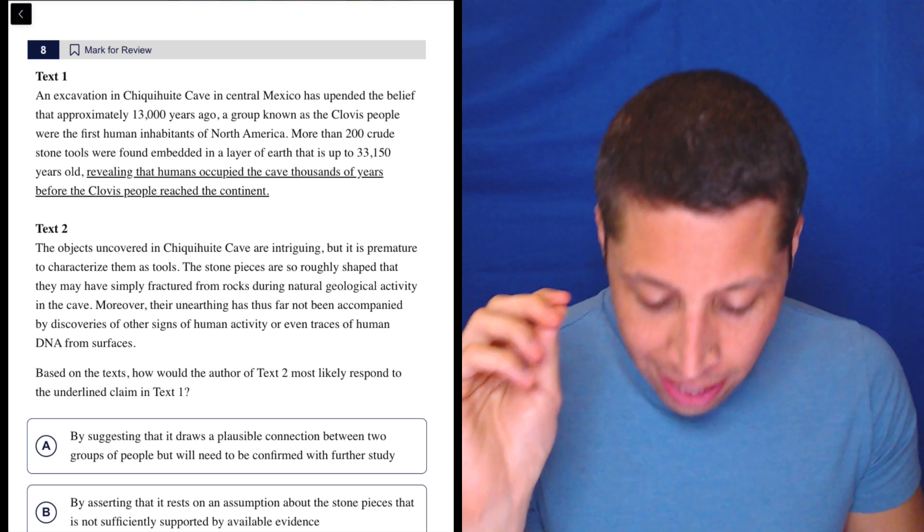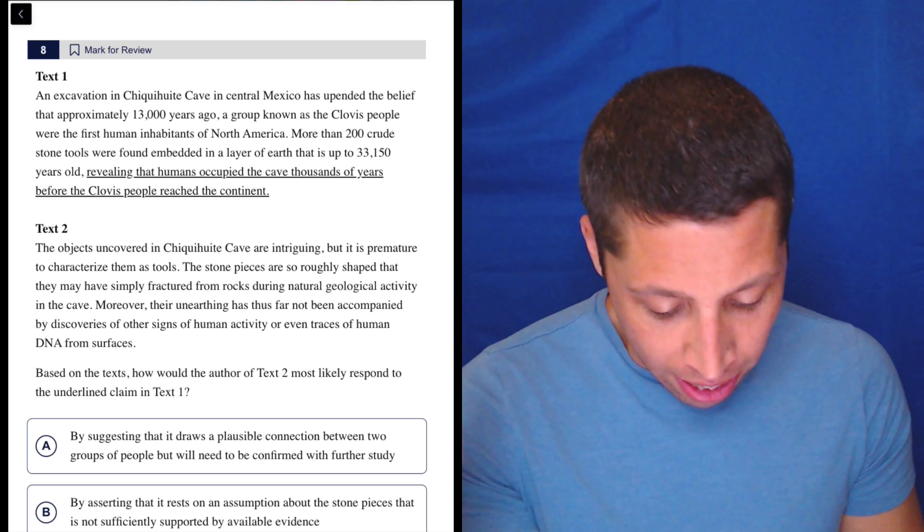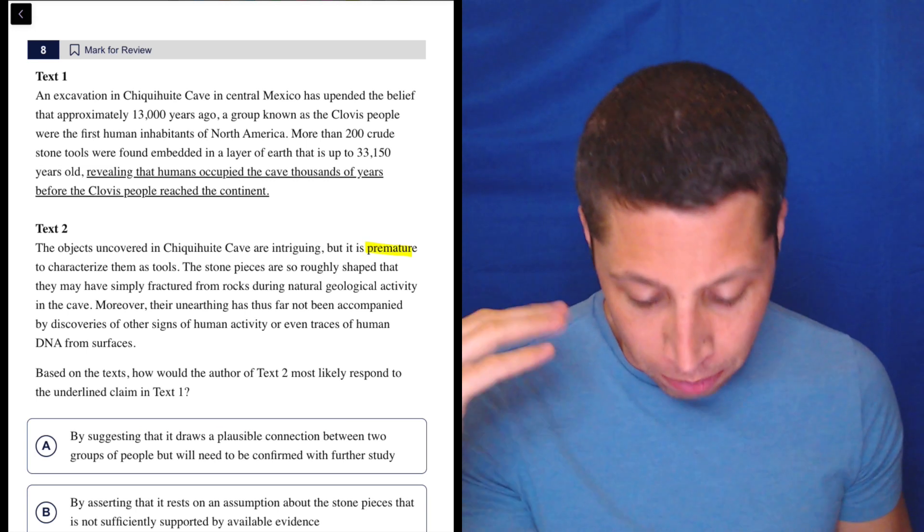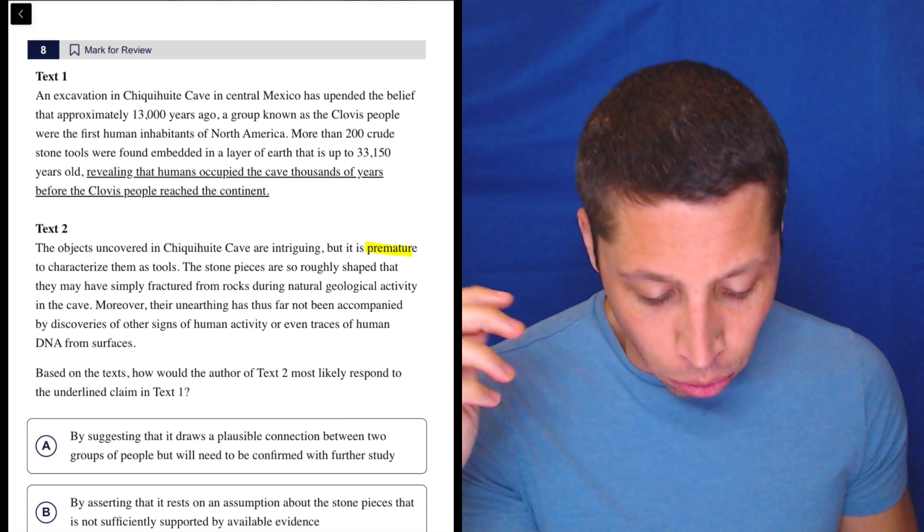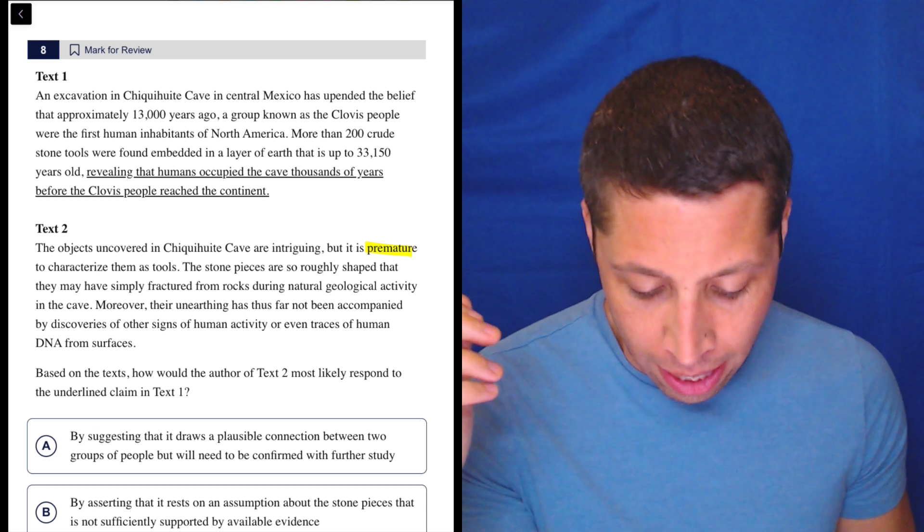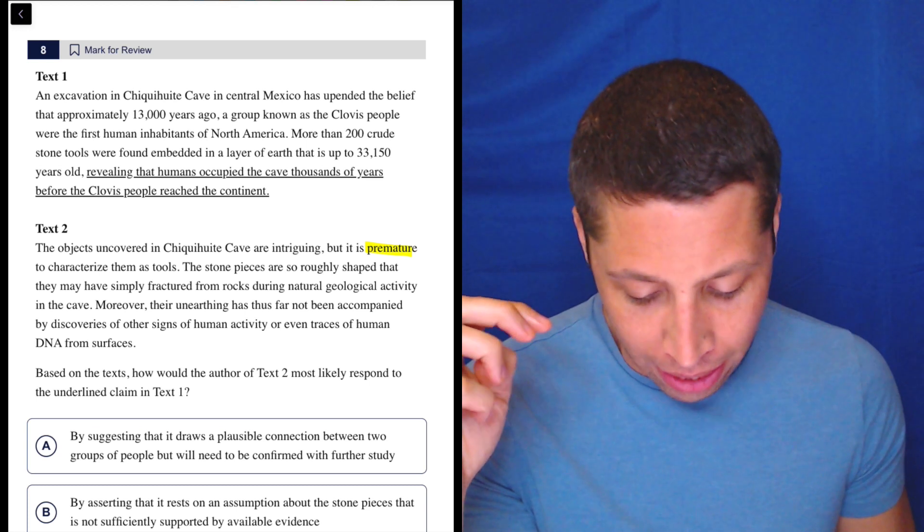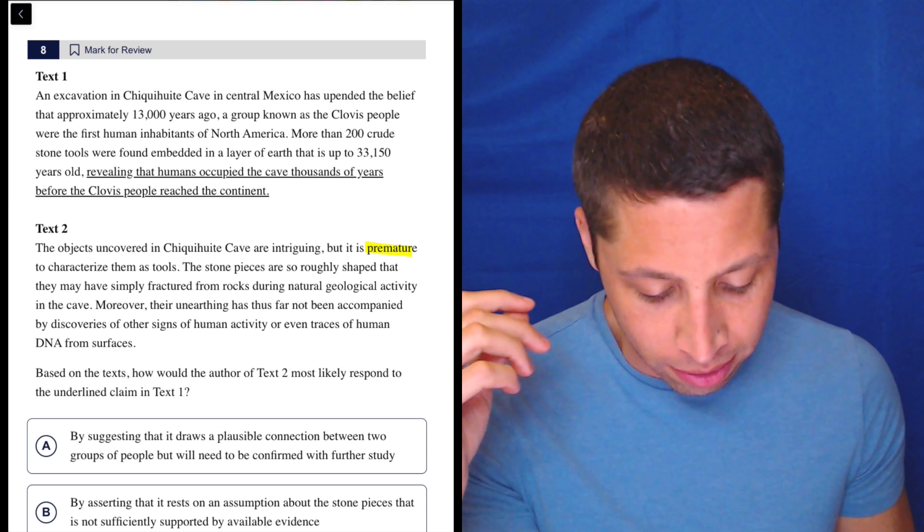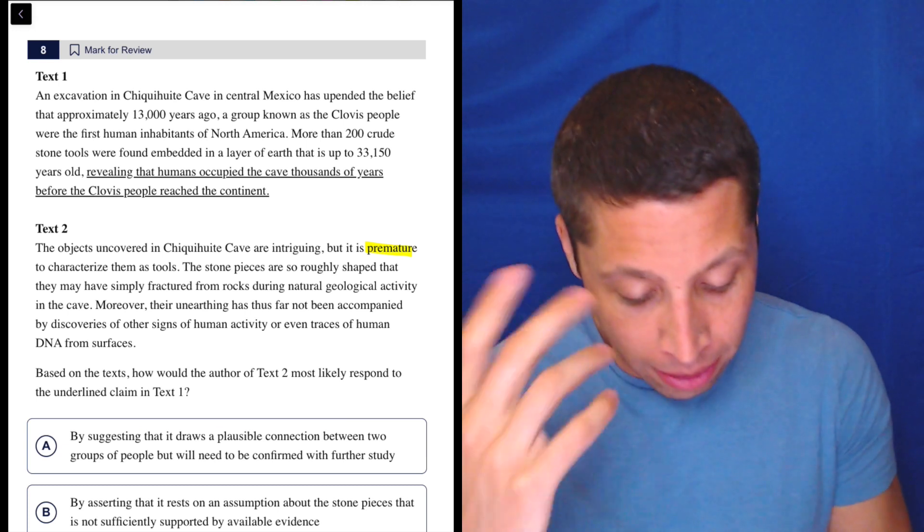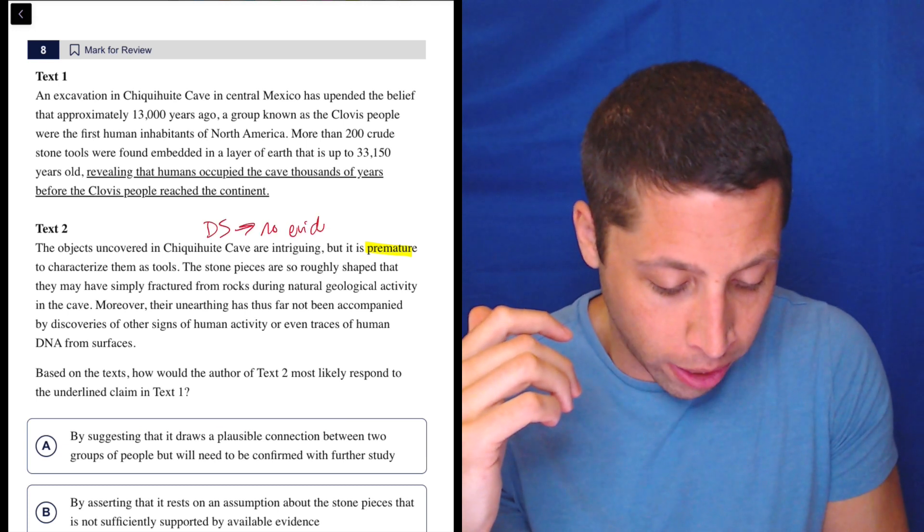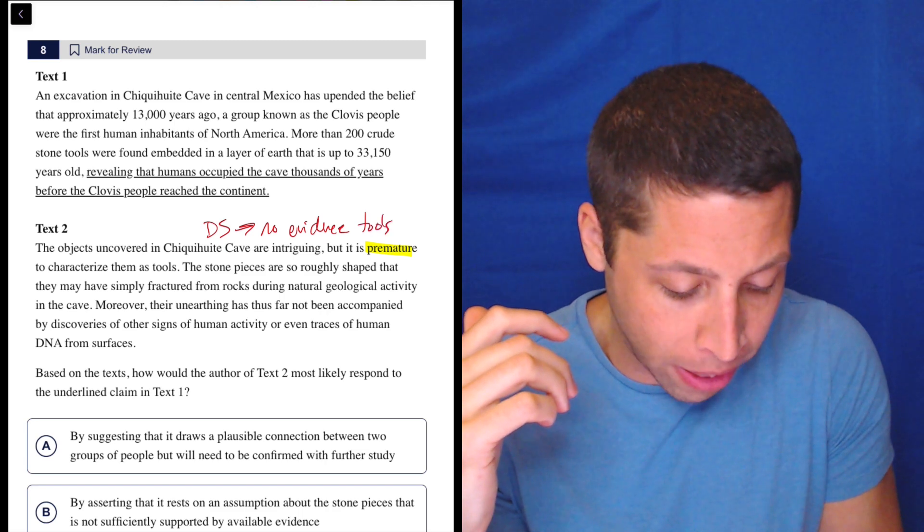Text two: the objects uncovered in this cave are intriguing, but it is premature to characterize them as tools. So premature means bad. The stone pieces are so roughly shaped that they may have simply fractured from rocks during natural geological activity in the cave. Moreover, their unearthing has thus far not been accompanied by discoveries of other signs of human activity or even traces of human DNA from surfaces. So my dumb summary here is it's premature because there's no evidence, right? No evidence that they're tools. That's my dumb summary.